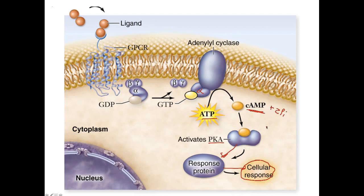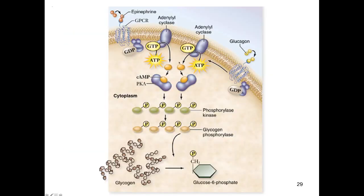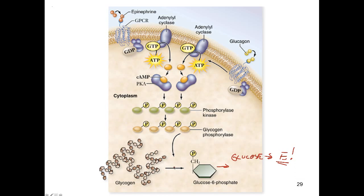Let's look at one of those responses in more detail: the response to epinephrine, or adrenaline. Adrenaline causes an immediate excitation response in animals. Epinephrine released into the bloodstream can cause target cells to respond through a long signal transduction pathway that results in the production of glucose released into the bloodstream, which fuels energy production when broken down.